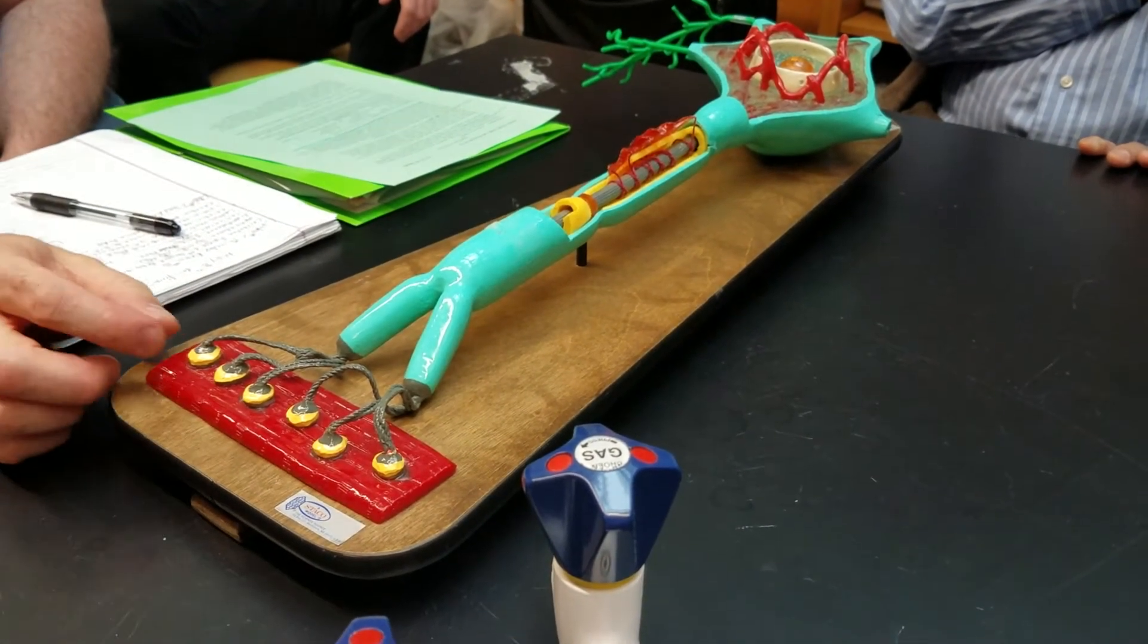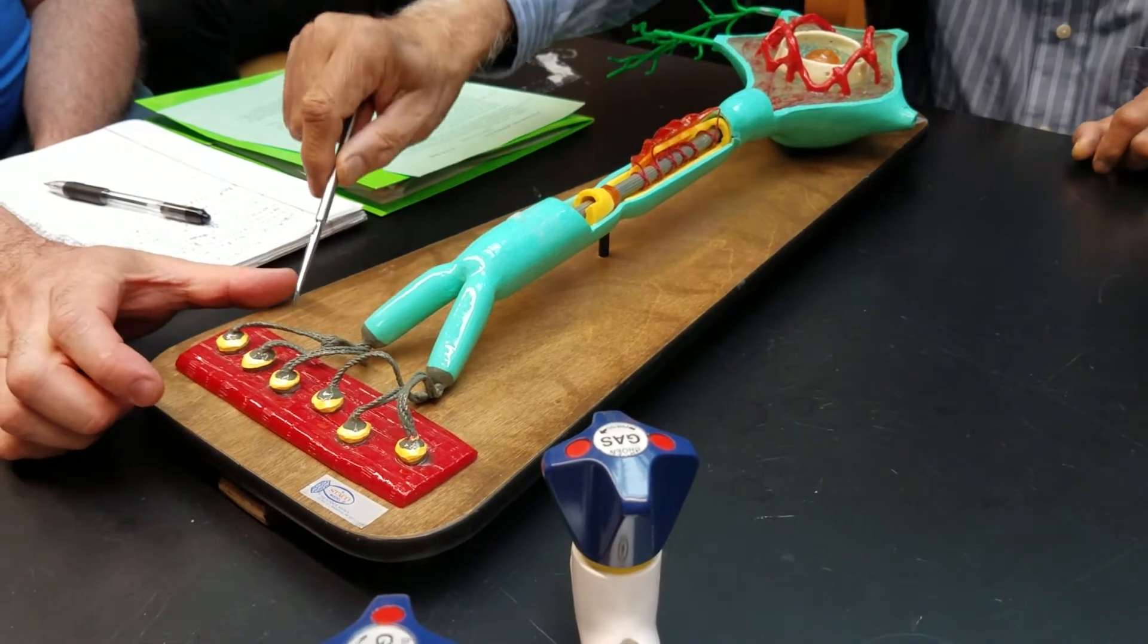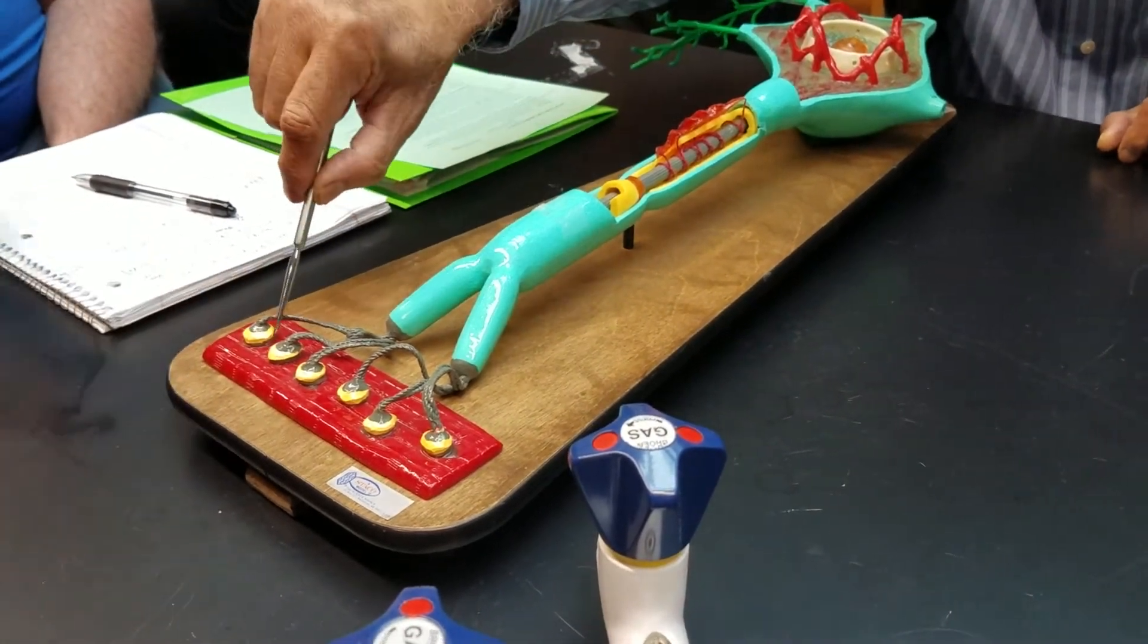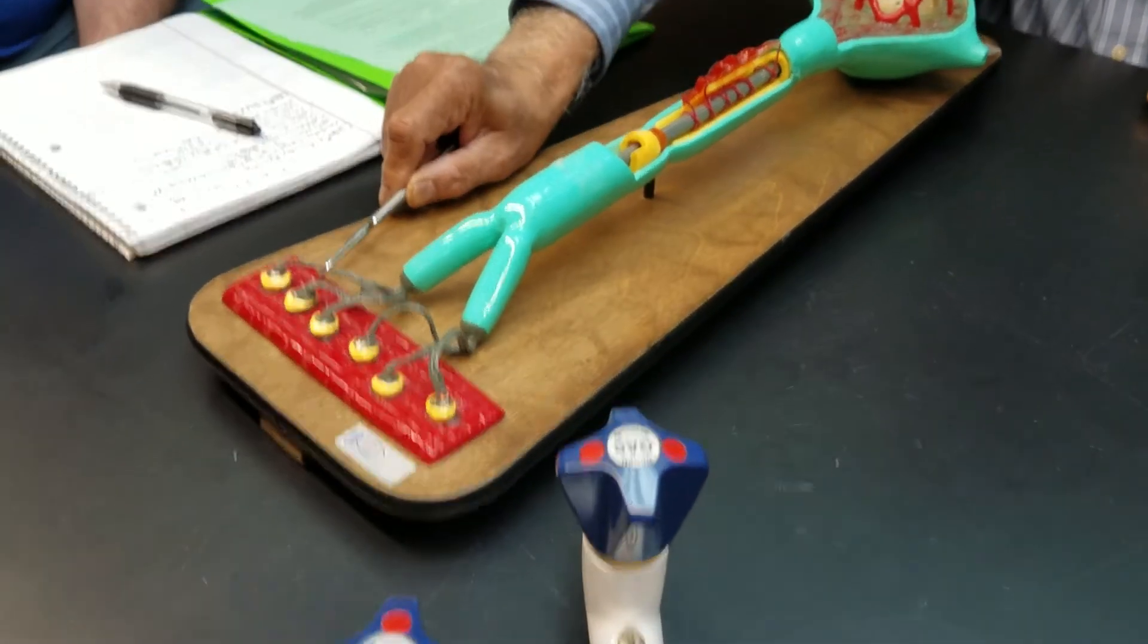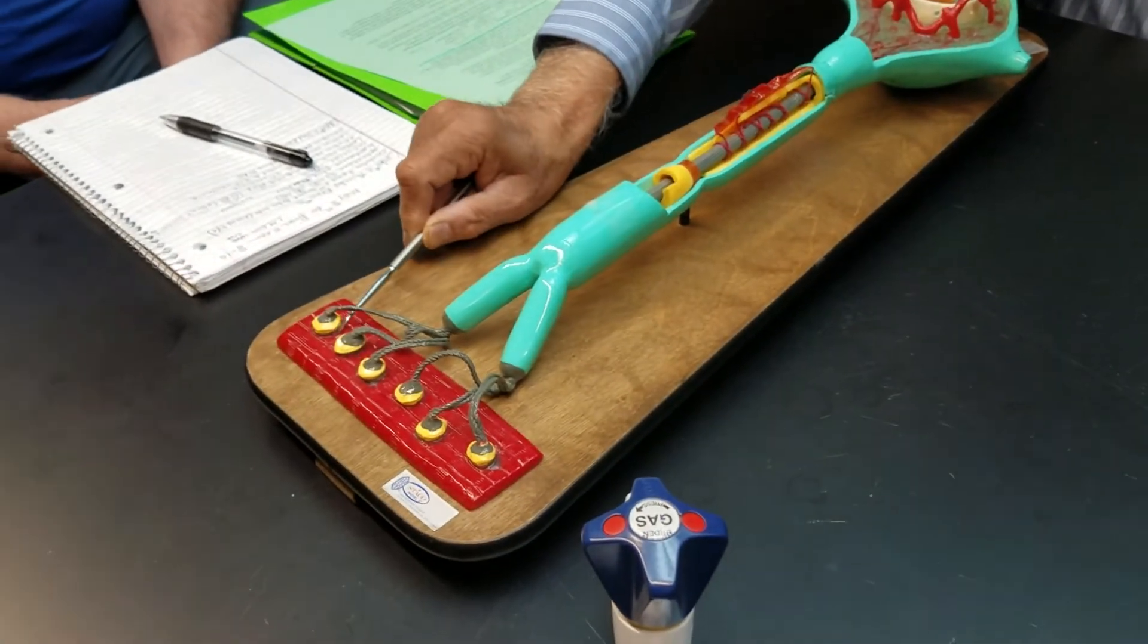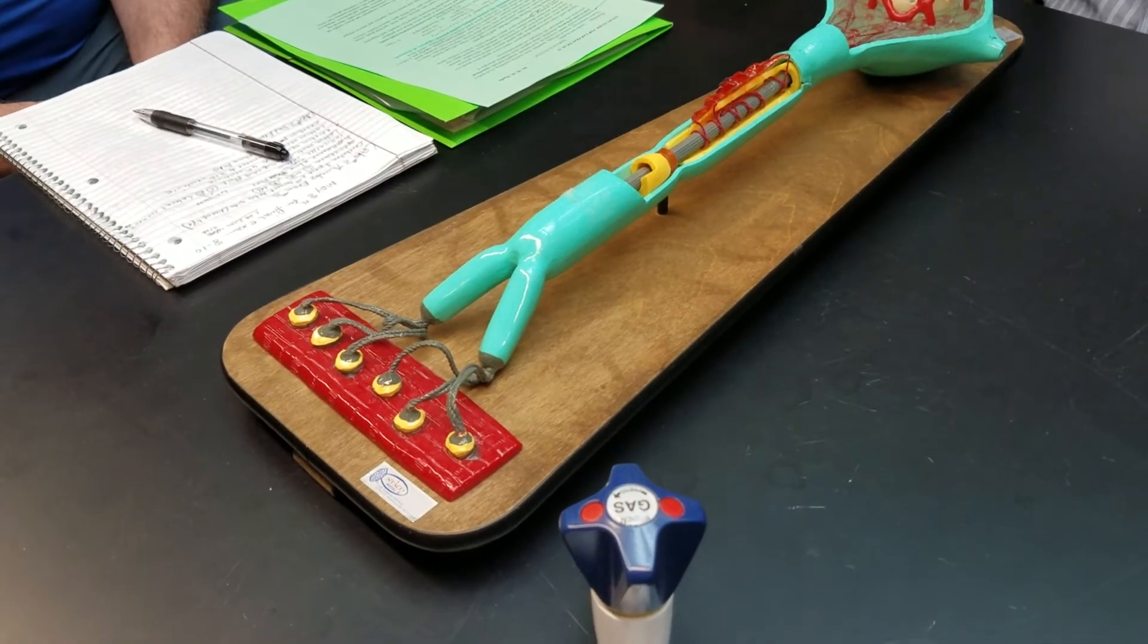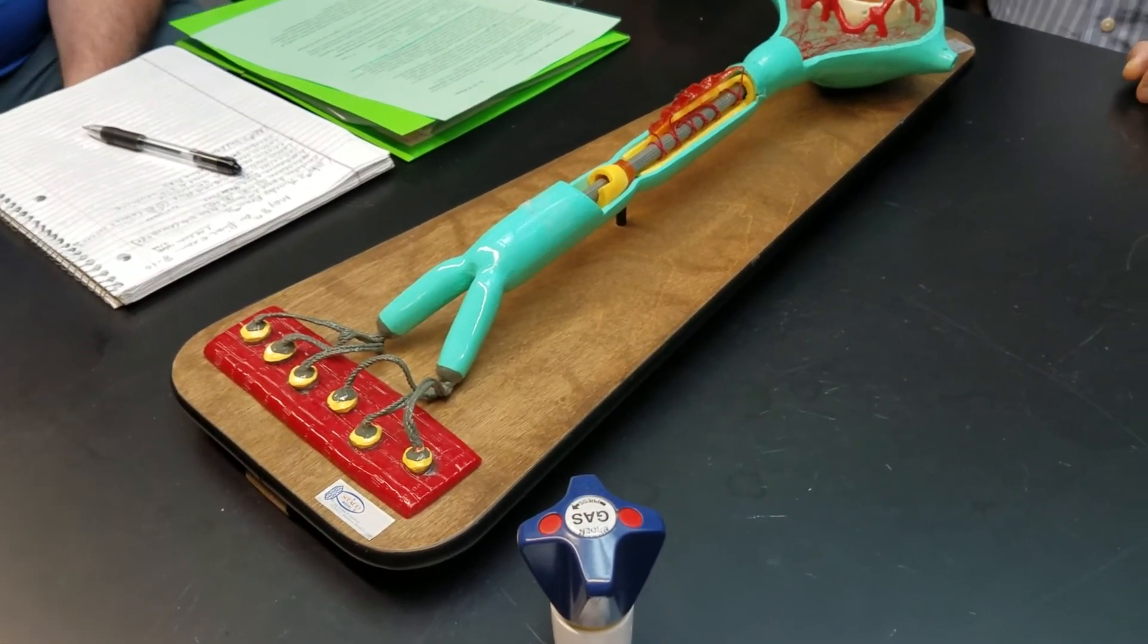Is the junction only where the bulb is? Or is it further out? No. This, this area. Just that area. This area. Not this neuromuscular junction. Not here. It's in this area. Okay.